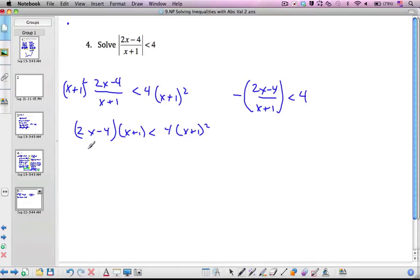I get 2x minus 4 times x plus 1 less than 4 times x plus 1 squared. Bringing things over to one side, I get negative 4x plus 1 squared plus 2x minus 4x plus 1 bigger than 0 now. Factoring out the x plus 1 gives me then negative 4x plus 1 times 2x minus 4. It's less than 0.